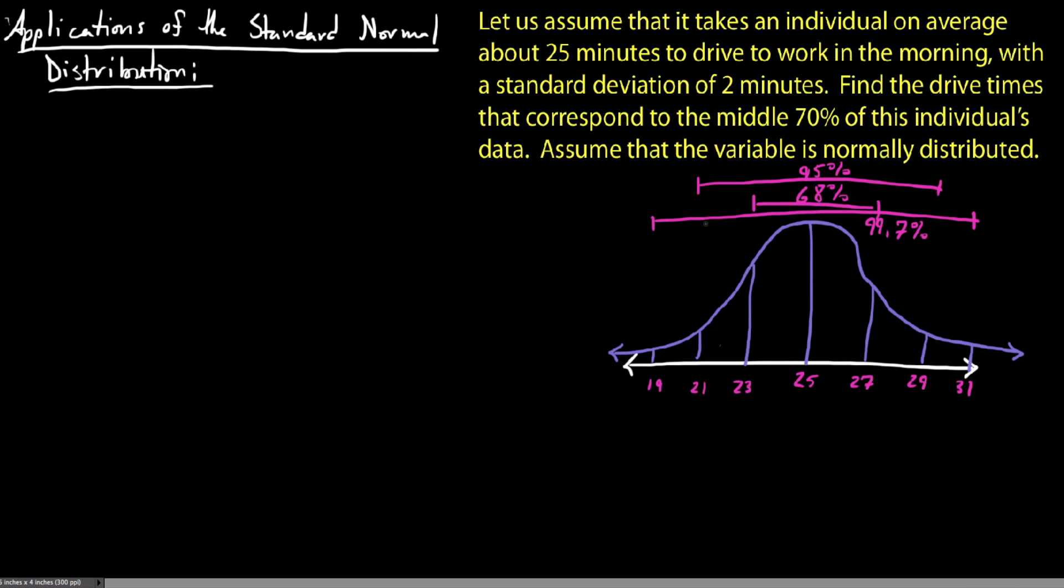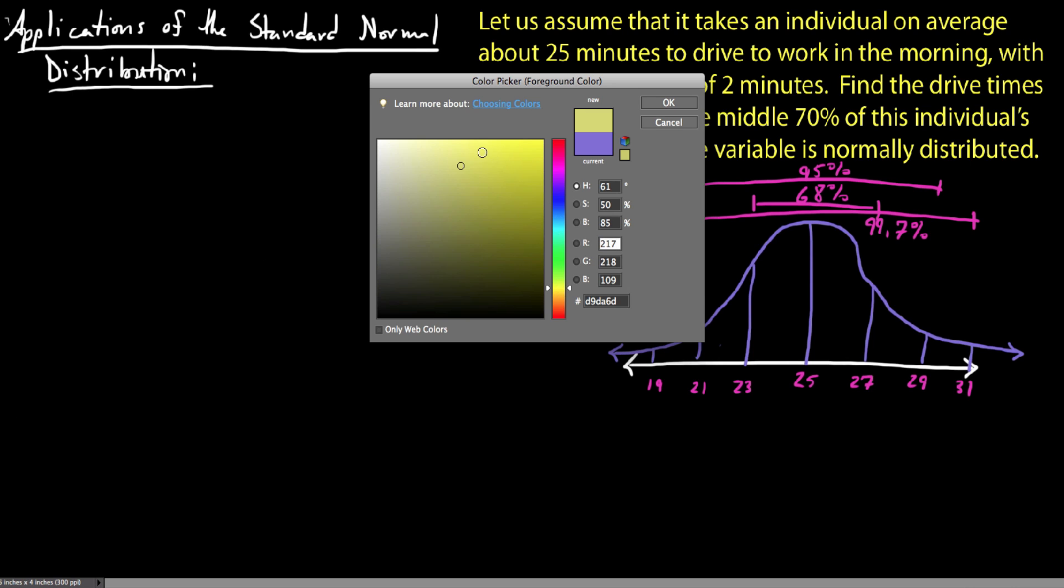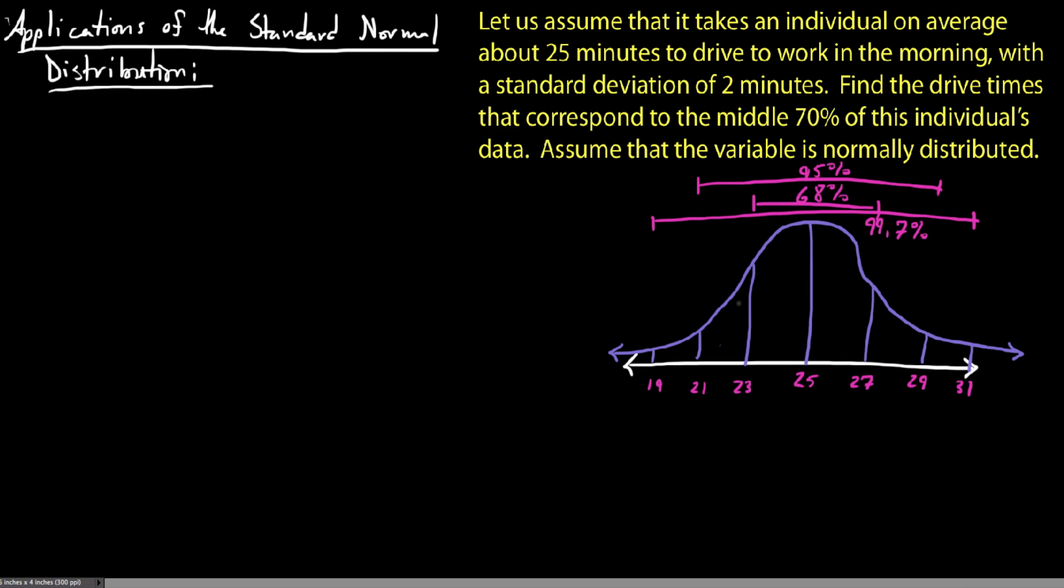The reason why I brought up the empirical rule is because notice that within one standard deviation, we have 68% of the population. So we could at least be fairly certain that we need to know that we would be outside one standard deviation. The middle 70% of data, I'm going to try to highlight here, but I would say it has to lie between here and here.